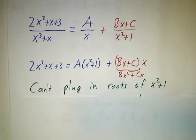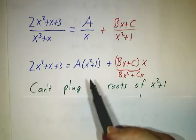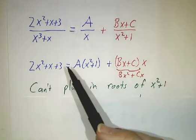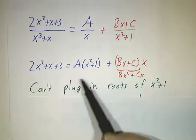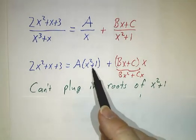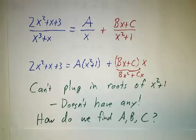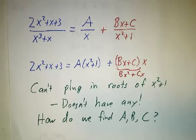And now we've run into a problem because we found that the best things to plug in were the roots of the polynomial. But there aren't any roots to x squared plus 1. No matter what value of x you pick, x squared plus 1 is going to be bigger than 1. So you don't have any of those roots. So how are we going to find a, b, and c?